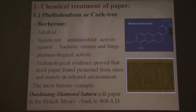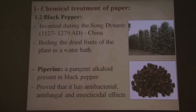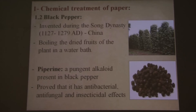The most famous example of this use is called the Diamond Sutra — a very large document in the British Library. The second material is black paper. This method had been used during the Song dynasty in China as well, by boiling the dried fruits of a plant in water and then dipping the paper in it. The paper contains alkaloid materials — a chemical substance which causes protection to the manuscript — and modern scientific research has proven it has antibacterial, antifungal, and insecticidal effects.